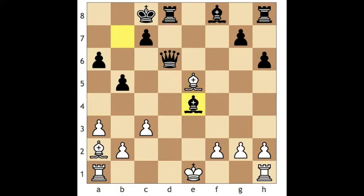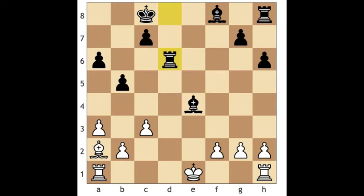He decides to exchange queens, and this is as far as I made it in my mental calculations. I thought material is equal or maybe I'm up one pawn and all things are good. But not really. All I needed was to go one more step further and I would have seen this move: Rook d8, bishop. And now what do I do? Nothing. So obviously this was a poor choice.